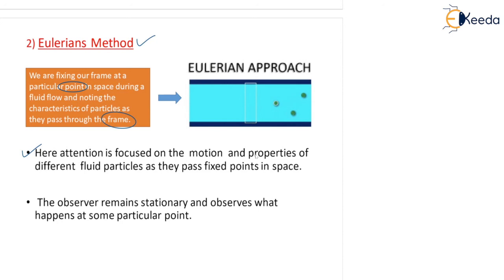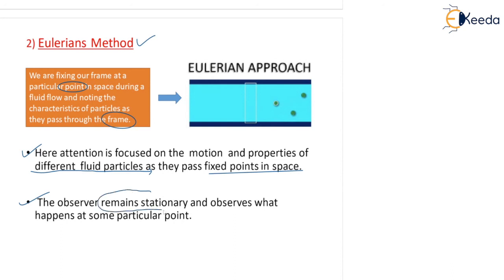Here, attention is focused on the motion and properties of different fluid particles. By sitting at one fixed point you can observe different fluid particles as they pass that fixed point in space — just like observing different persons from a fixed camera to see whether they are violating or following the traffic rules. The observer remains stationary and observes what happens at that particular point or section.